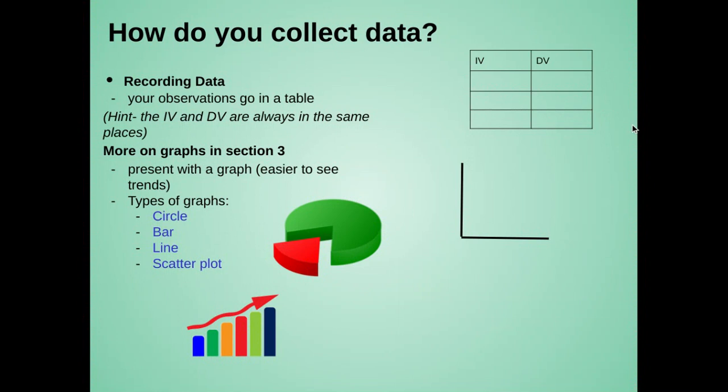We're going to talk more on graphs in section three of this chapter. But we like to use graphs because when we present with a graph, it makes it easier to see trends. The different types of graphs, hopefully you remember these. A circle graph, we use those a lot when we're talking about parts of a whole. A bar graph compares different things. A line graph shows change over time. And a scatter plot is a more advanced type of graph that we'll get into later.